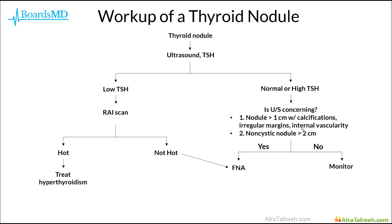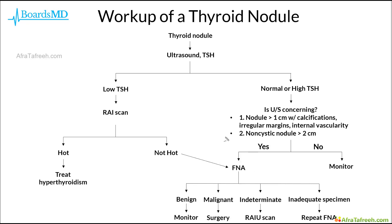If we answer no, then we can simply monitor that nodule over time for changes in size or symptoms. However, if we answer yes that the ultrasound is concerning for malignancy, then we ultimately arrive at getting the fine needle aspiration, or FNA. Once we arrive at this step from either of these two distinct pathways, the results of the FNA determine our next step. If the FNA has benign findings, we can simply monitor the patient. If it shows malignancy, the patient will need surgery, often with a partial or complete thyroidectomy. If the specimen is inadequate, we simply repeat the FNA.